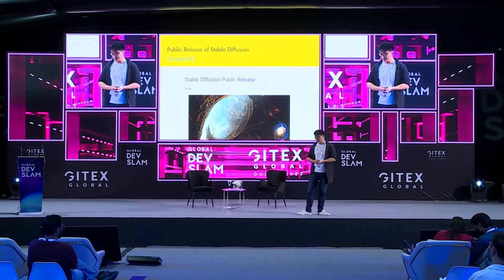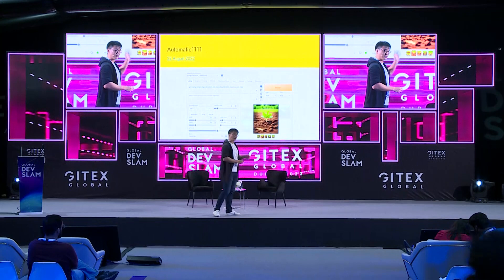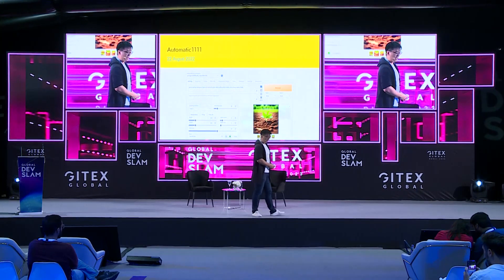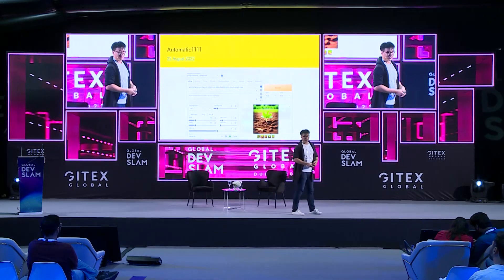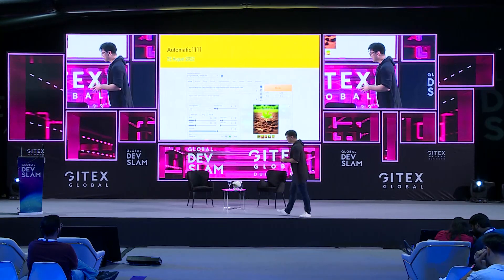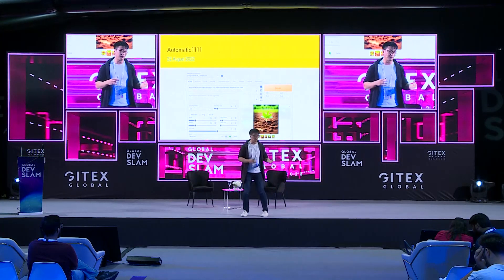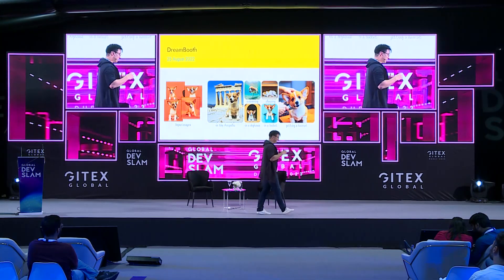One of the early things that got created was an easy way to interact with this model. An open source app released on the same day as the public release was called Automatic1111 — you can search it on Google and download it. The UI isn't too nice but it works. You can download it onto a computer and generate images with it, and a lot of people are using it to create really nice images.